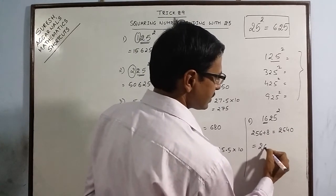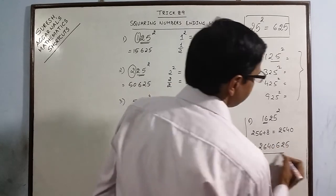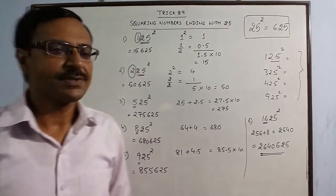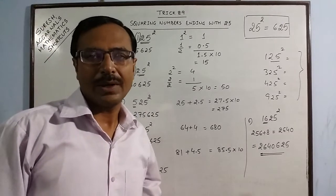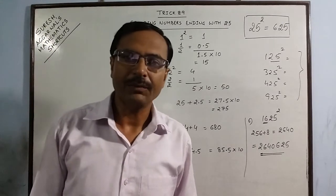So your answer is 2640625. See, you take only 4 seconds to crack the square of this number which is ending with 25.